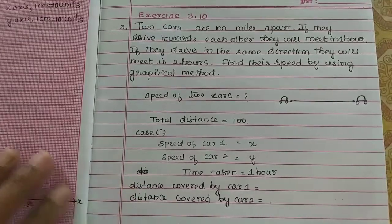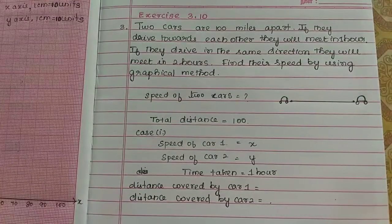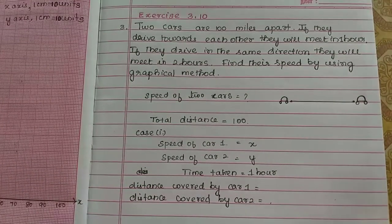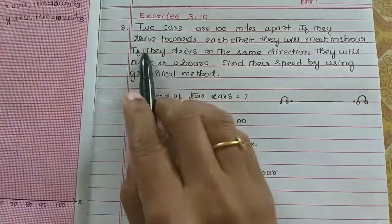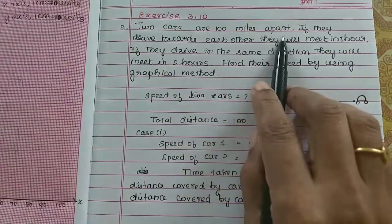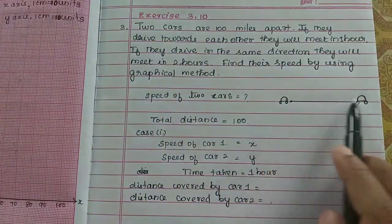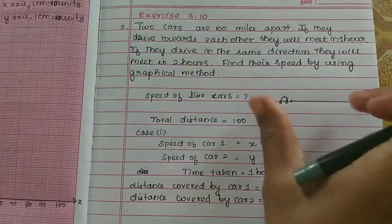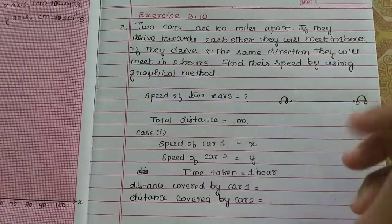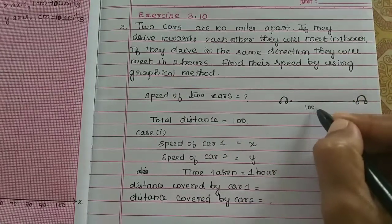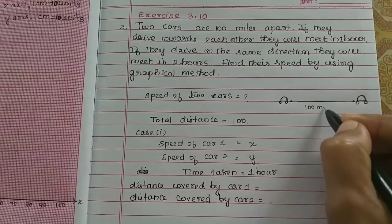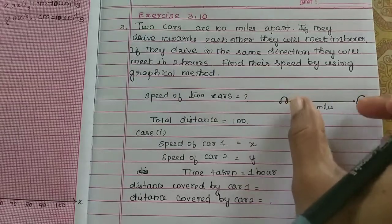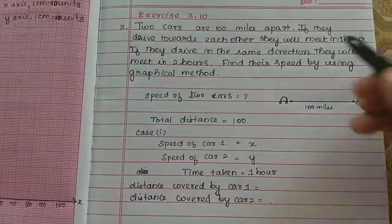Students, in this video, let's look at thoughts 3.10. Two cars are 100 miles apart. There are two cars at 100 miles distance. These two cars are 100 miles apart.